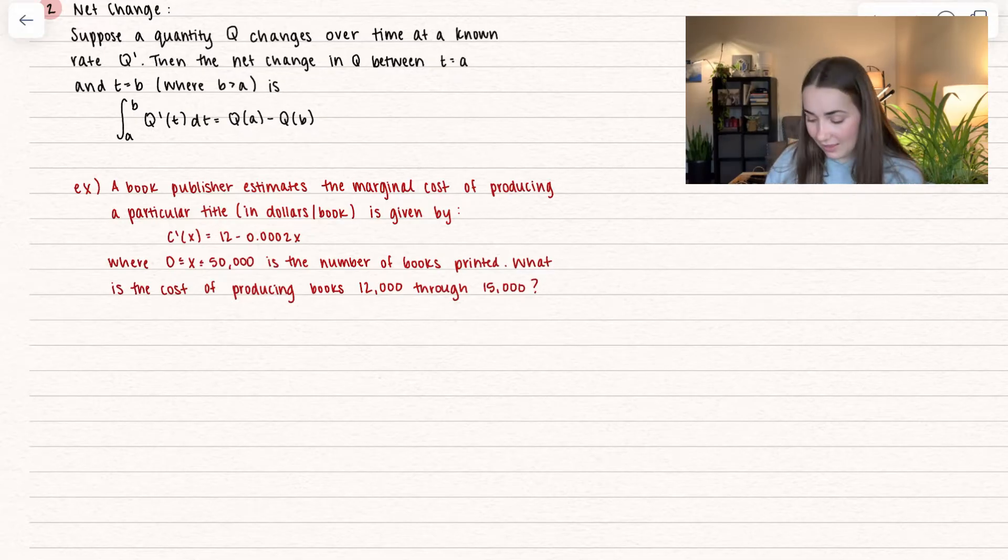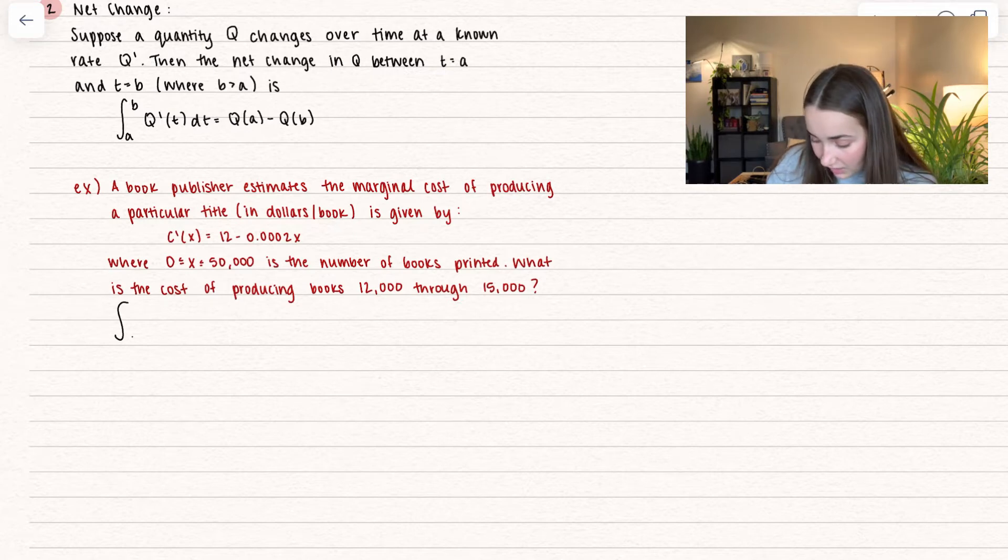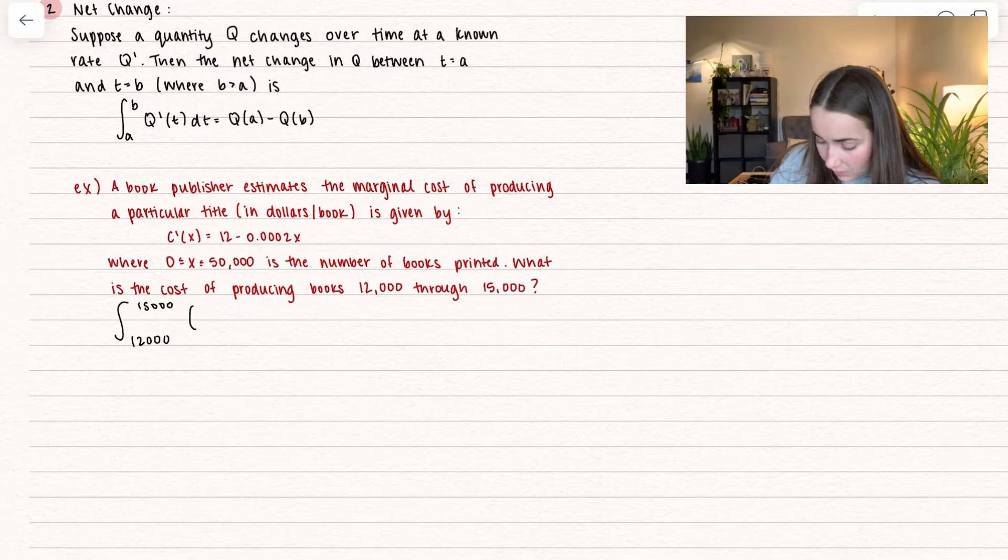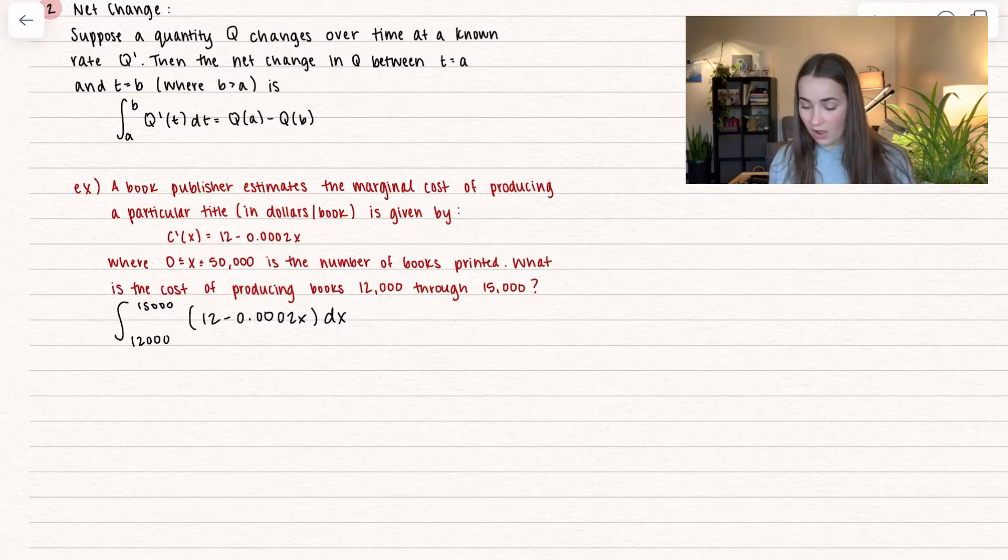What is the cost of producing books twelve thousand through fifteen thousand? So what we can do to find that value, and this is seen a lot in business calc, is we start at twelve thousand and we're ending at fifteen thousand. We're going to be integrating the marginal cost, and this is going to give us the cost of producing those three thousand books.